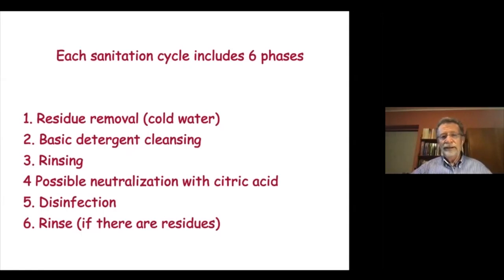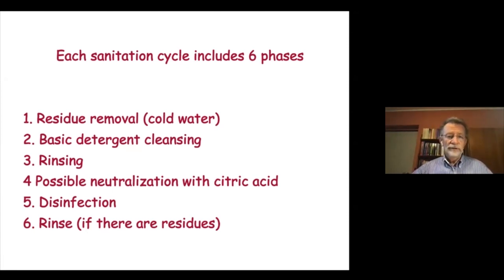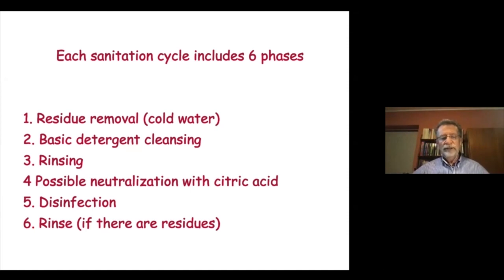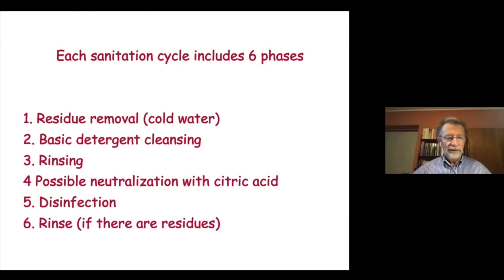All operations before bottling involve six steps: first, residue removal — wine residue removal — usually by means of cold water or lukewarm water; then basic detergent cleansing; then rinsing. There is also the possible use of citric acid for neutralization, and then disinfectant.